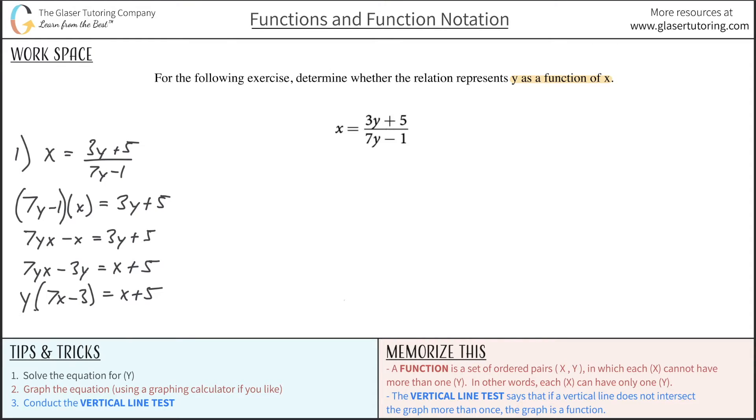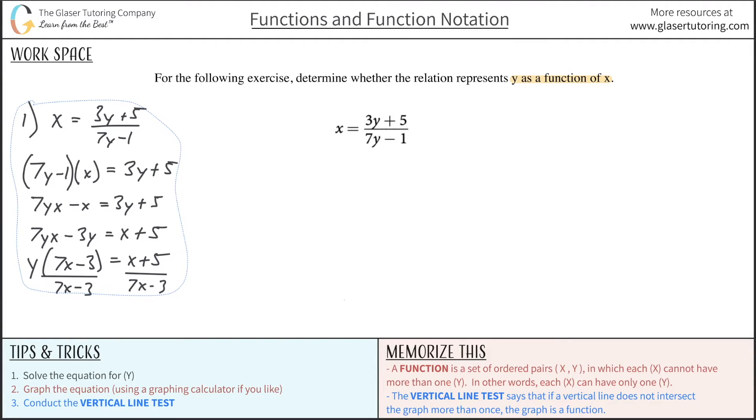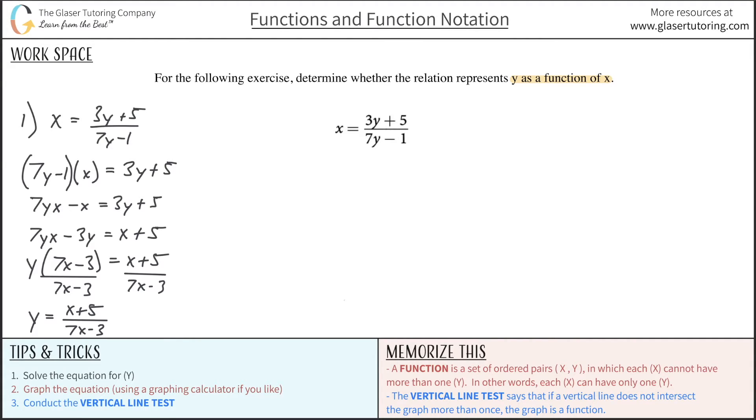So now I can make this look like this. So y times 7x minus 3 is equal to x plus 5. And lo and behold, now I can divide this result by 7x minus 3. And I can also divide the right-hand side by the same thing, 7x minus 3. And now I'm going to be left with my formula that's solved for y. So y is then equal to x plus 5 all over 7x minus 3. So there you go, hardest part about this problem is solving this thing for y. But there's the function.